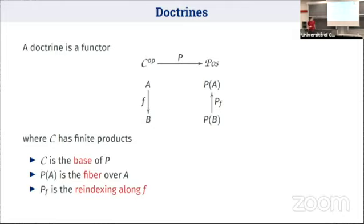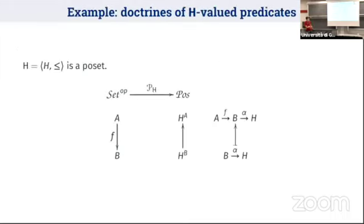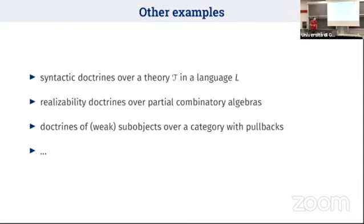The intuition for a doctrine is that it models logic, where the objects and arrows of the base category model types and terms, and the posets associated with a type model the properties of that type ordered by logical entailment. The paradigmatic example is the doctrine of H-valued predicates, which is a doctrine over the category of sets. We fix a poset H, then define a doctrine mapping a set A to the set of H-valued functions with the pointwise order, and mapping a function to the pre-composition monotone function.